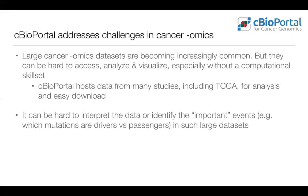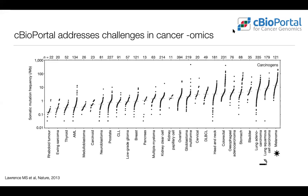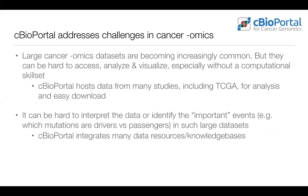One difficulty of these datasets is identifying what's important. Some of you might be familiar with plots of mutational burden across cancer types — as you look at carcinogen-induced cancers, you can see hundreds or thousands of mutations in a given cancer, making it really hard to identify drivers versus passengers. So we've integrated a variety of publicly available resources and knowledge bases directly into cBioPortal so that information is at hand while you're looking at your data.